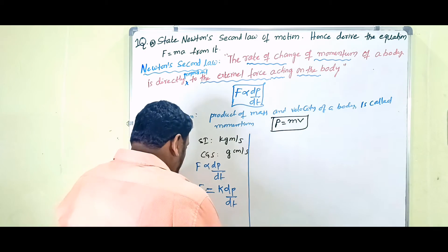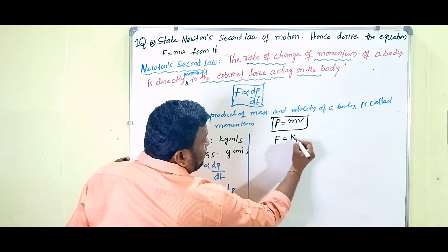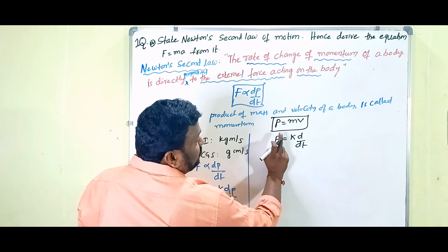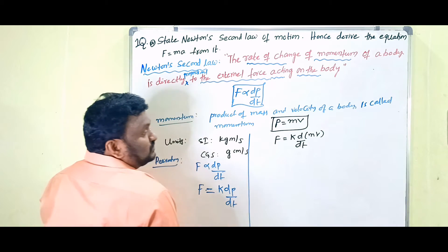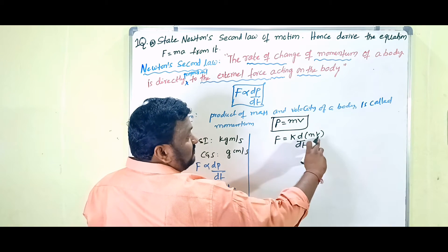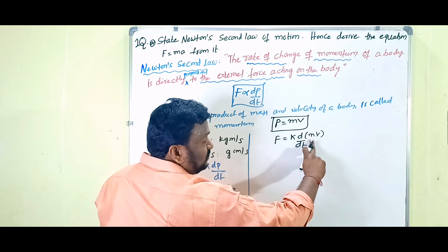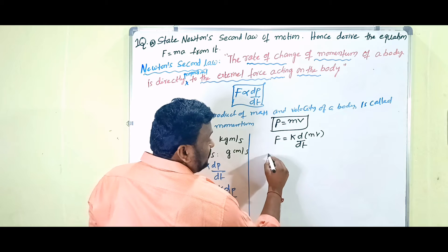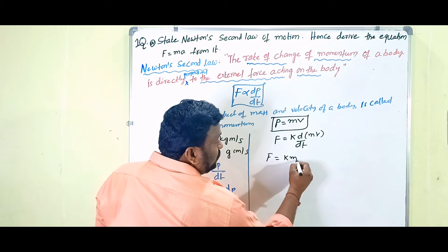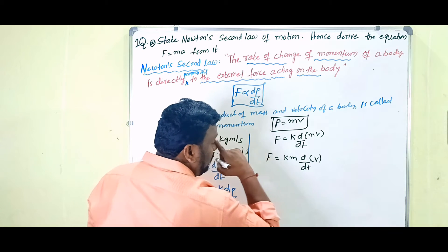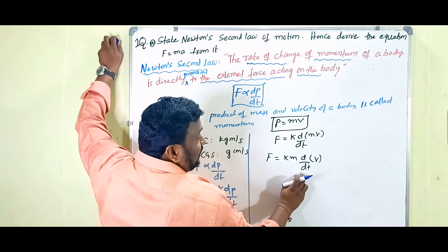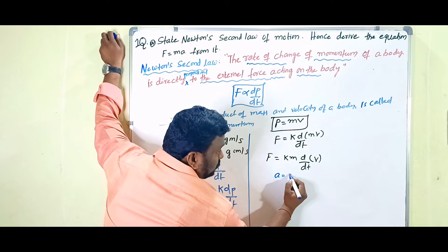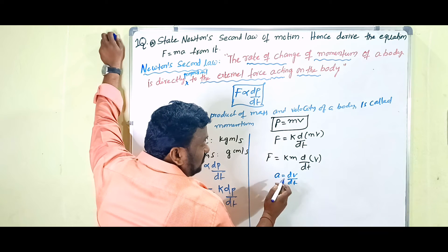We are writing F equals k into d/dt of P. Since P equals mv, this becomes F equals k into d/dt of mv. When we apply some force, the velocity is going to change but mass is never changed. So we write F equals k into m into d/dt of v. Now, d/dt of v is the rate of change of velocity. And we know that a equals dv/dt — the rate of change of velocity is called acceleration.